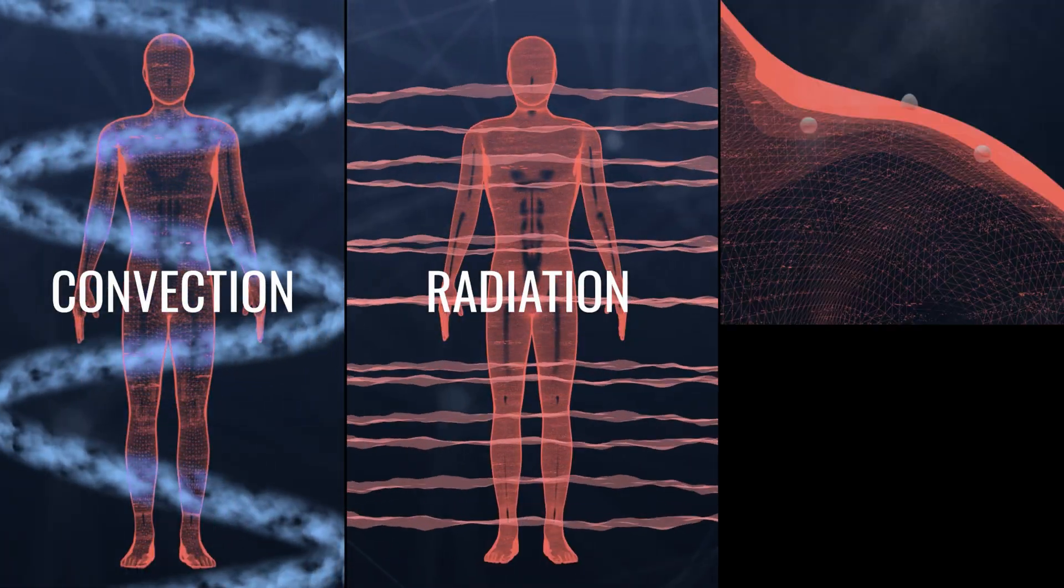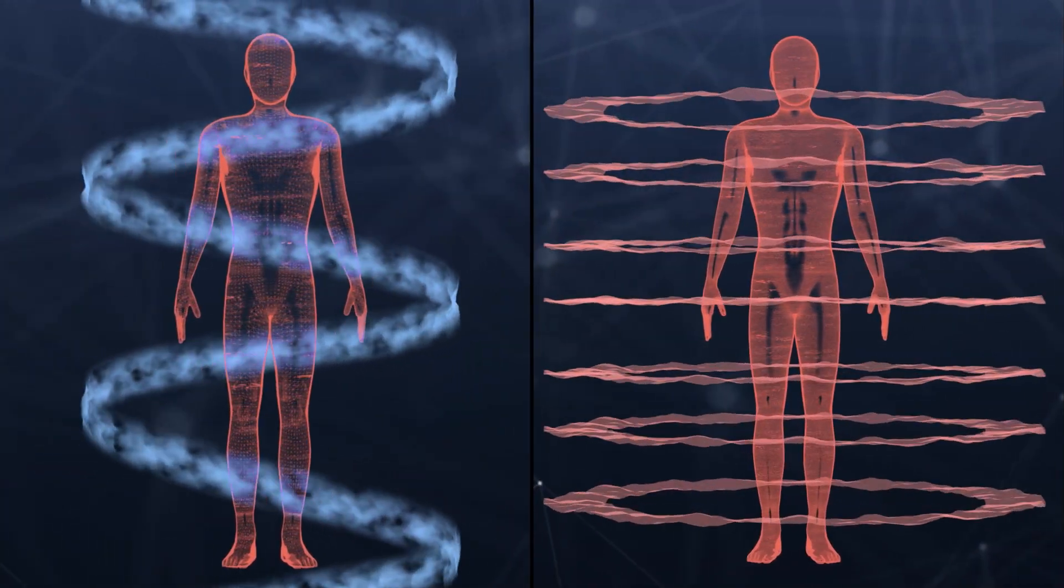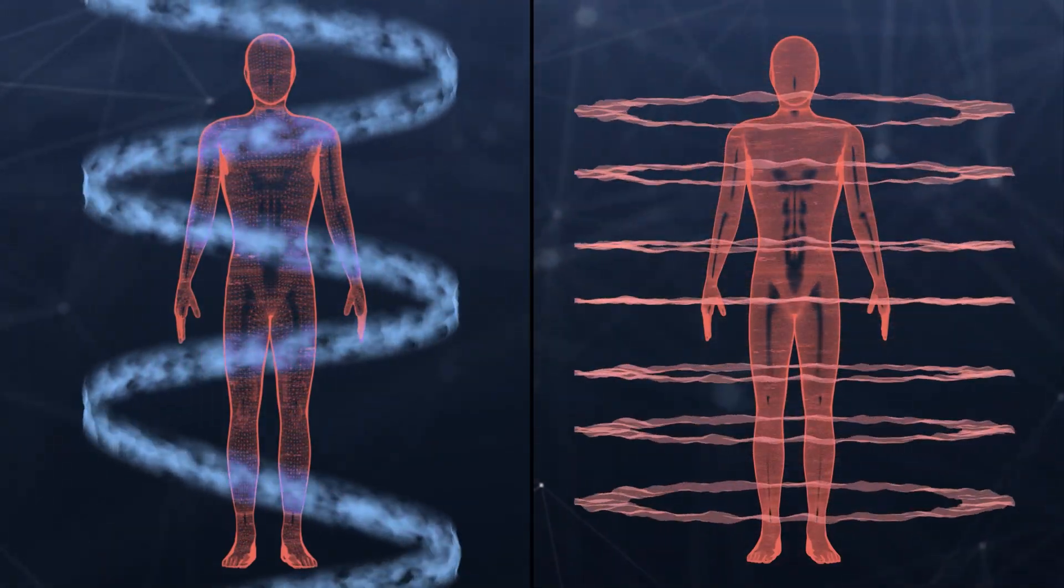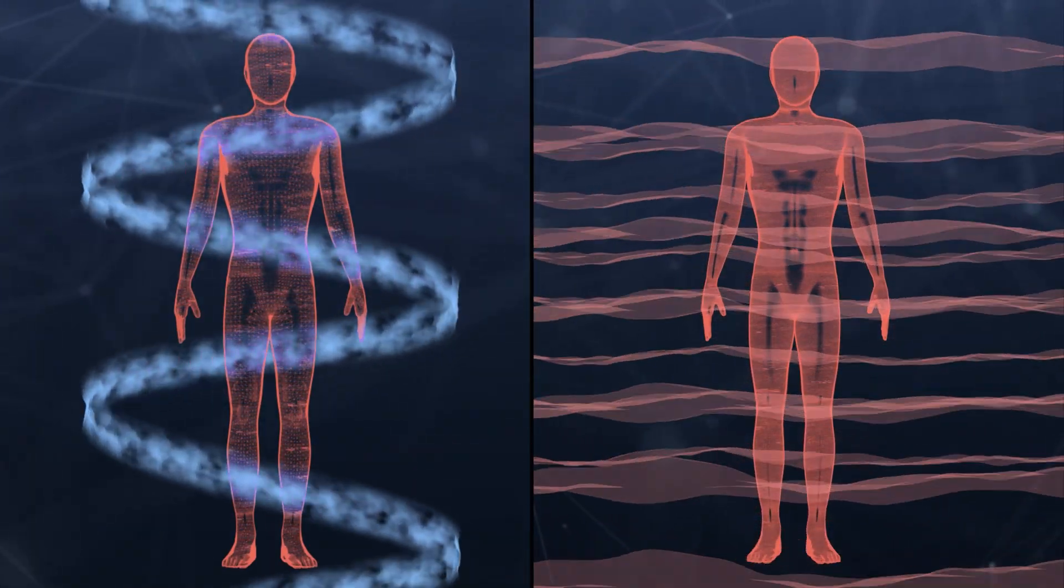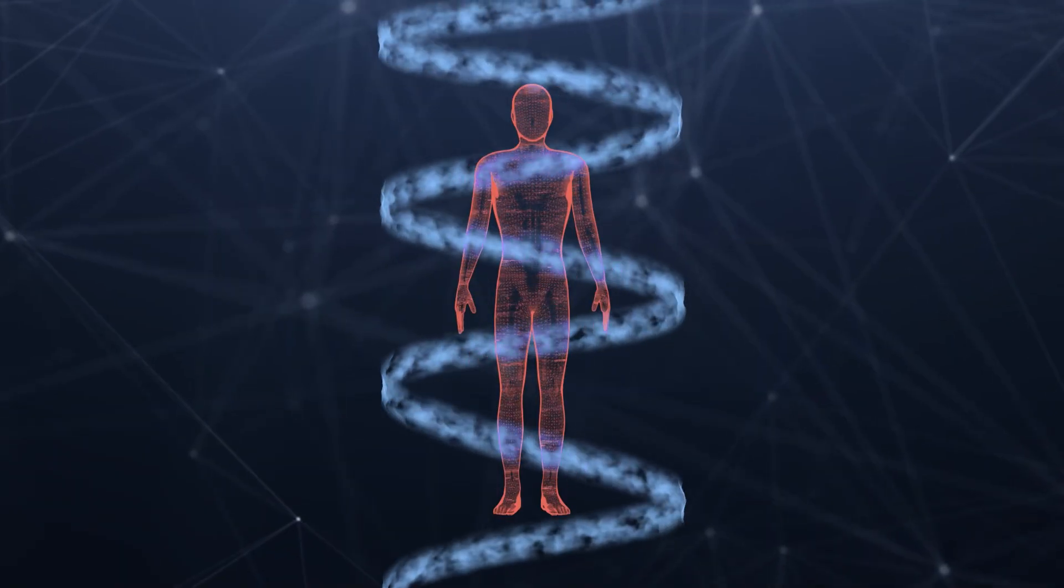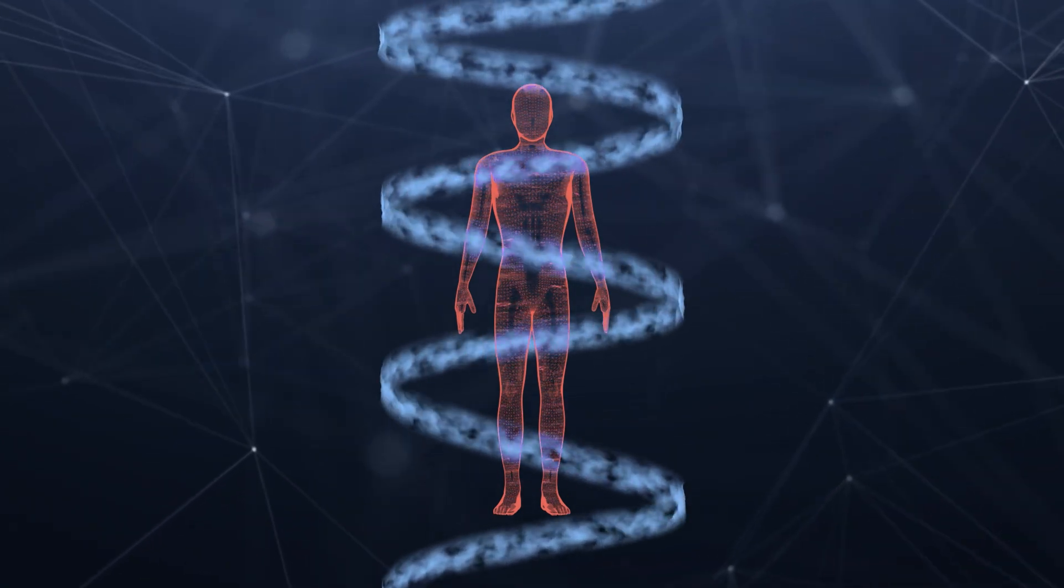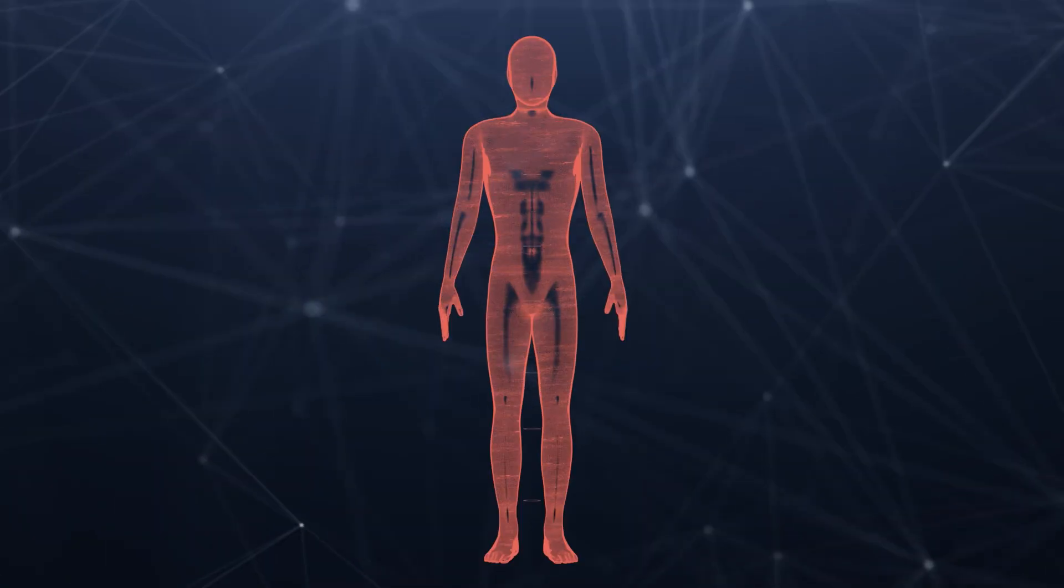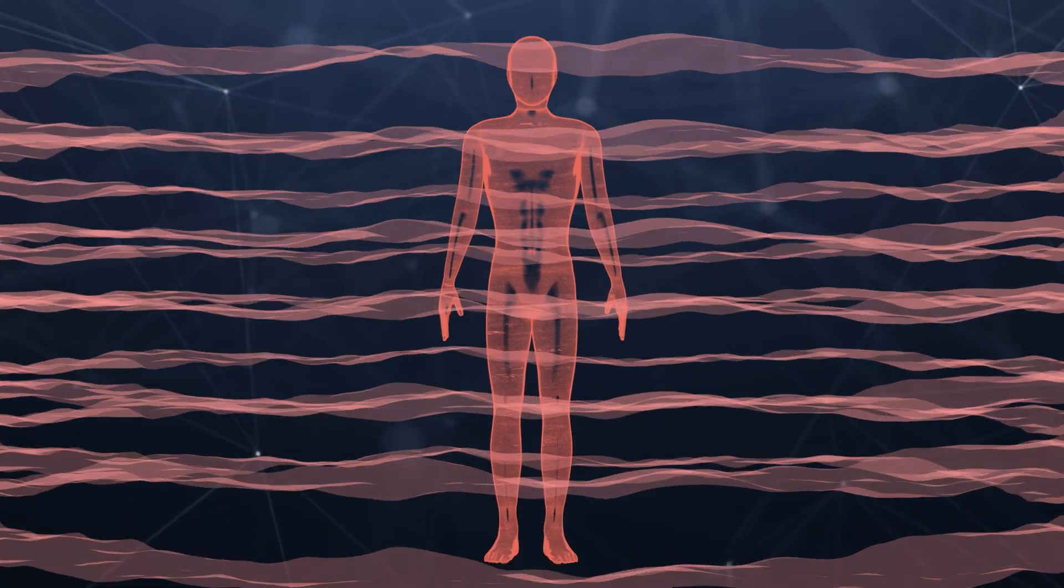Convection, radiation, and evaporation. Heat loss from convection and radiation are similar. Both result from heat moving from a hot surface, such as your skin, to a cooler surface, like the air around you. Convection differs from radiation in that it requires a fluid to transfer heat, while radiation is energy transferred using electromagnetic waves.